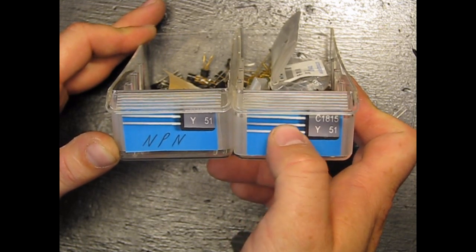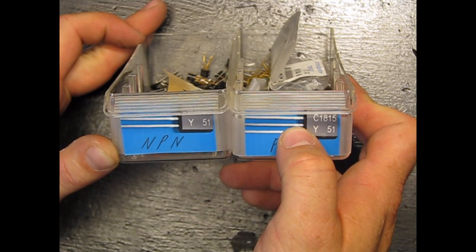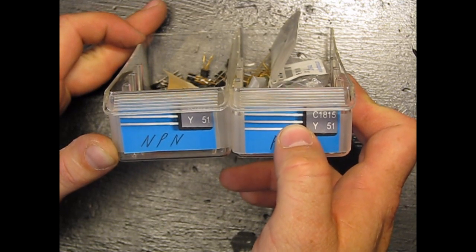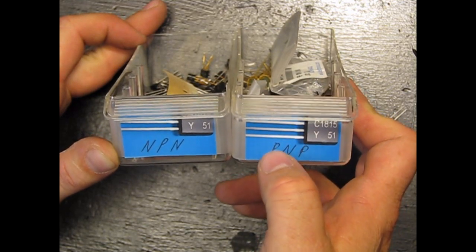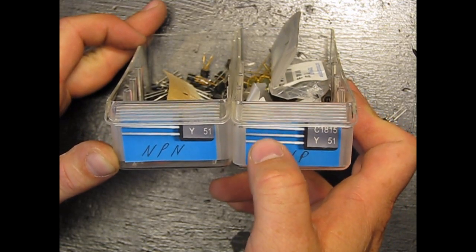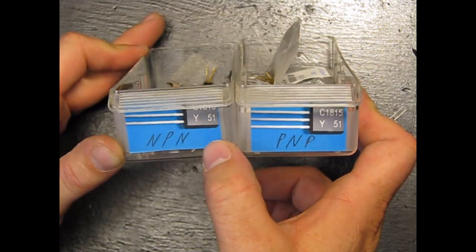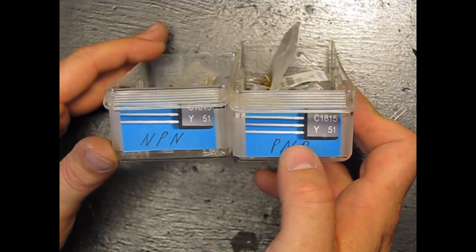So, this center pin generally is the gate, which is what they call it. But transistors can have different configurations. The gate can be on different pins. But we'll just assume that the gate is in the middle.